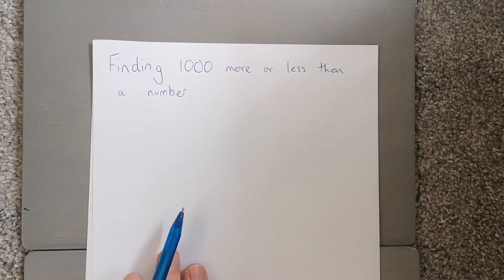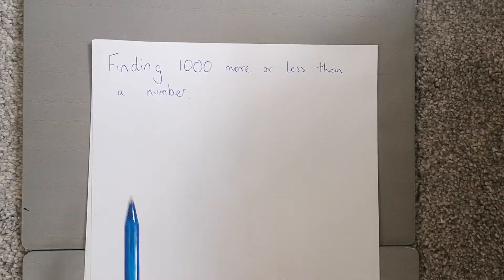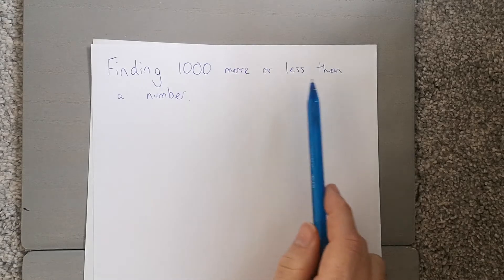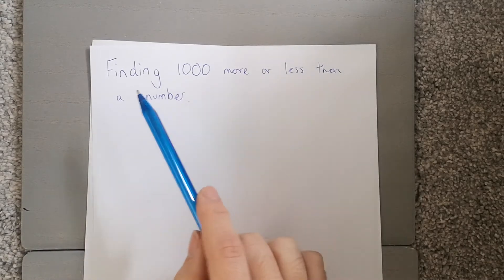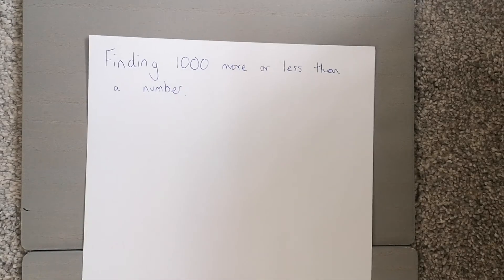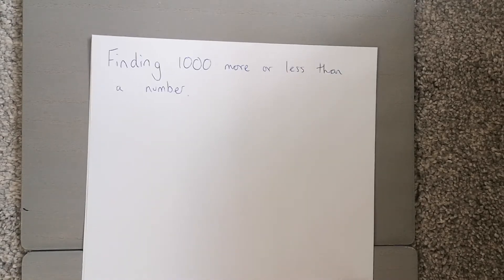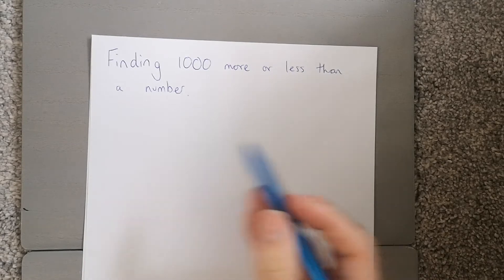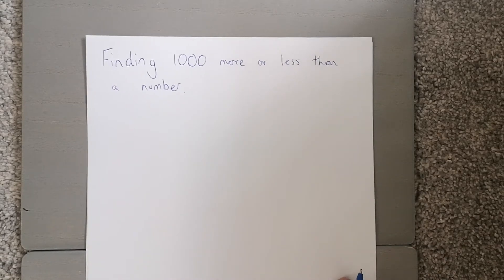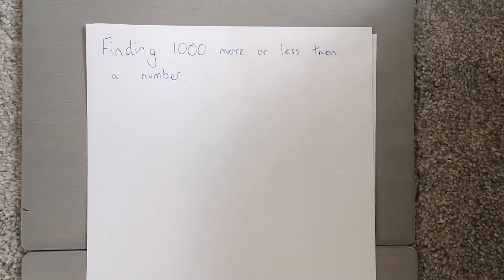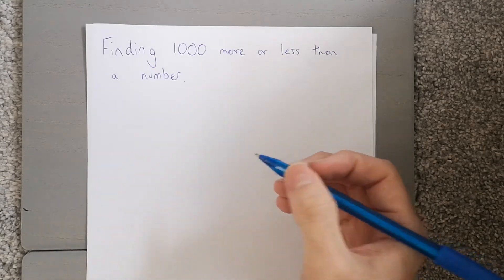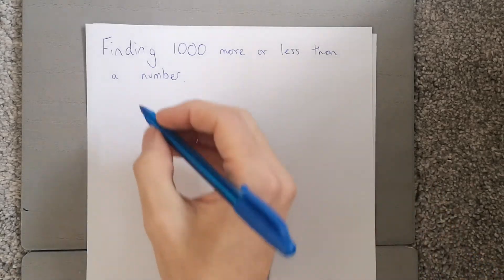Today we're going to be looking at finding a thousand more or less than a number. We've looked at addition and subtraction before, but now we're really going to focus on finding a thousand more or less than a number. We want to focus on the place value side of it.